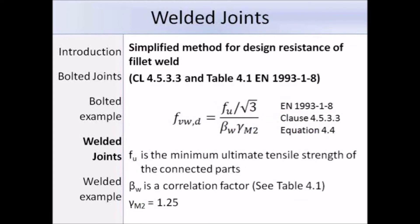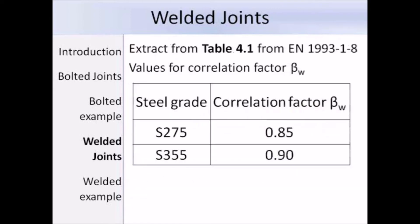Now that we know what A is, we need to work out FVWD, the design shear strength of the weld, using equation 4.4. This equation contains the term FU, the ultimate tensile strength, and beta W, a correlation factor obtained from table 4.1, which I'll show on the next slide, and the partial factor gamma M2 which is equal to 1.25.